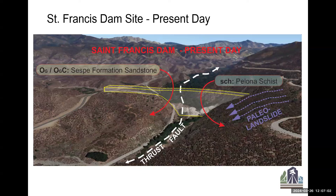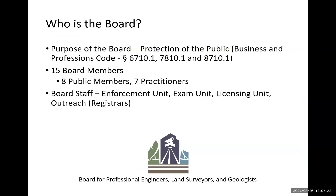I mentioned no geologic study — well, this is what is there. There's a kind of superimposed dam. You can see it's a conglomerate on the SESP formation and a schist that was an old landslide deposit with a thrust fault in the middle. That wasn't accounted for in the design, so it was important to start licensing engineers. The main purpose is protection of the public. The board is made up of 15 board members: eight are public members, seven are practitioners, one of which is a geologist. I'm board staff. I help out the enforcement unit as well as the exam and licensing units.